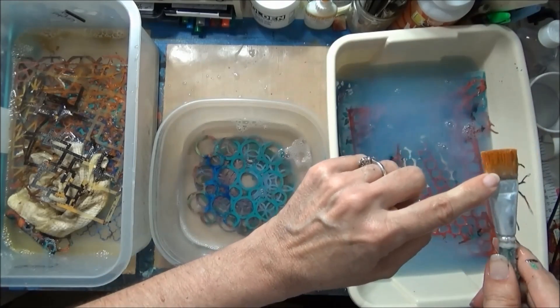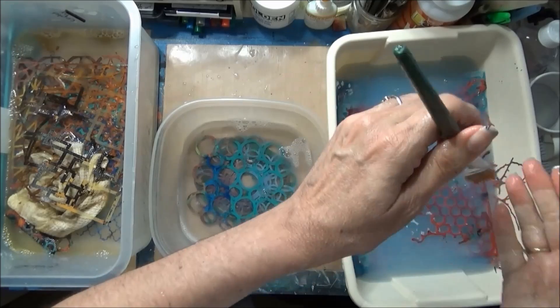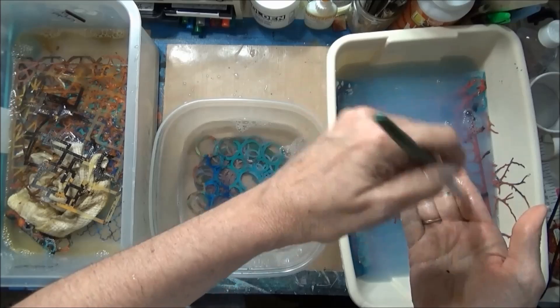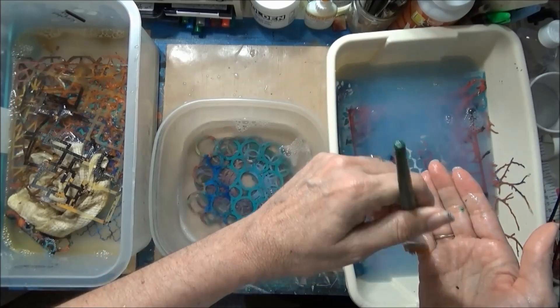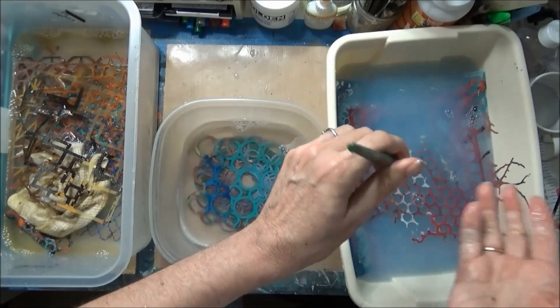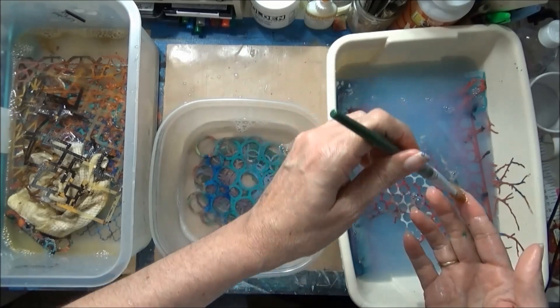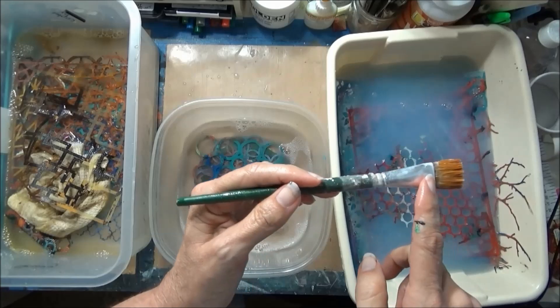You can also use the Murphy's oil soap to remove gel medium from your brushes. Usually what I do is I put the Murphy's oil in a glass container and I swish it around and I get it really into the brush and I let it sit for a while, and then I add the water and the soap and let it sit overnight.